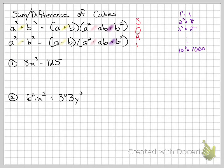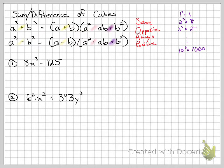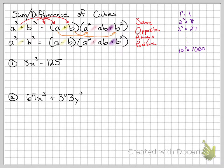There's an acronym to help: SOAP. S stands for Same — the first symbol is the same as the problem. O stands for Opposite — the second symbol is opposite. AP stands for Always Positive. To build the factors: take the cube root of the first term to get A, take the cube root of the second term to get B. Then the second parenthesis has A squared, then A times B (the middle), then B squared. SOAP gives you the signs.